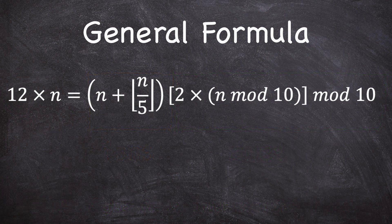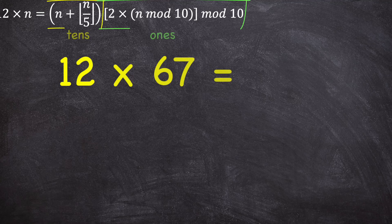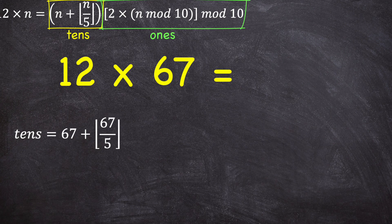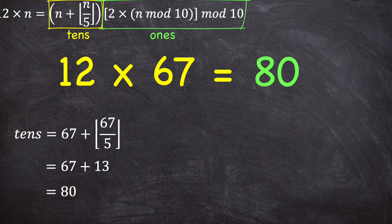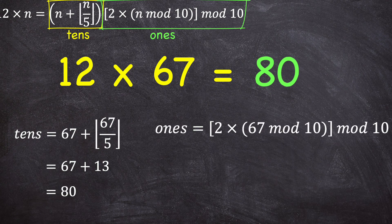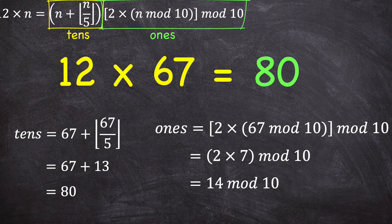Using this formula, let's find the product of 12 and 67. Start by taking the floor of 67 divided by 5, which gives 13. Add that 13 to 67, giving 80 — this is the number of tens in the answer. Then to find the ones digit of the product, do 67 mod 10 to get its ones digit of 7, double it to get 14, and do 14 mod 10 to get its ones digit of 4. This is the ones digit of the product, making the answer 804.